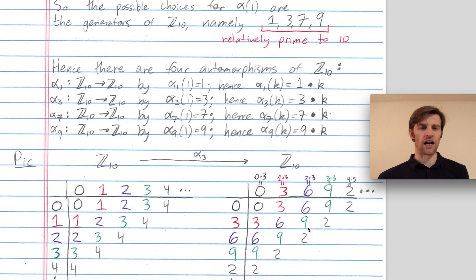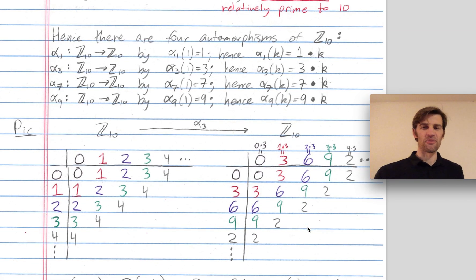You can picture alpha 3 as this automorphism from Z_10 to itself that multiplies every element by 3. So 0 gets mapped to 0, 1 gets mapped to 3, 2 gets mapped to 6, 3 gets mapped to 9, 4 gets mapped to 4 times 3 which is 12, but mod 10 that's 2, etc.